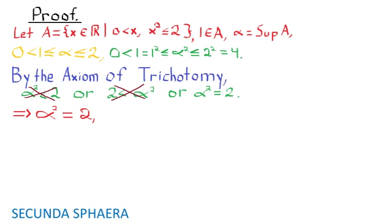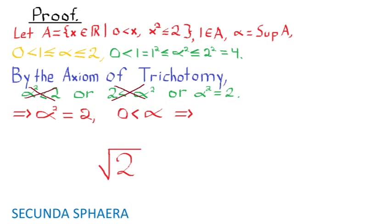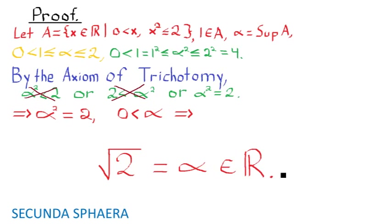It only remains that alpha squared equals 2, and 0 is less than alpha. This means that the square root of 2 equals alpha, which is a real number. This ends the proof.